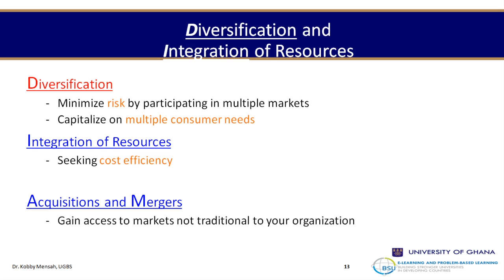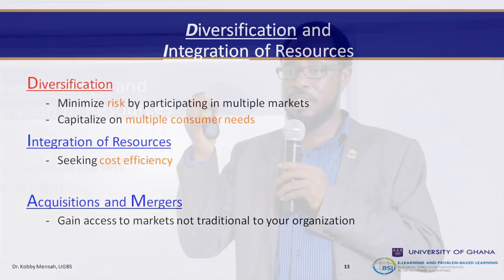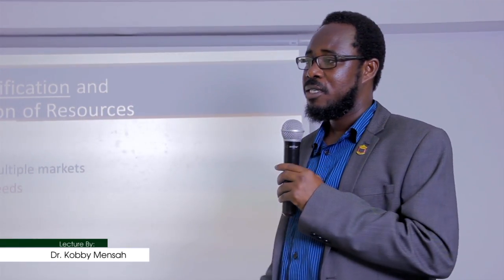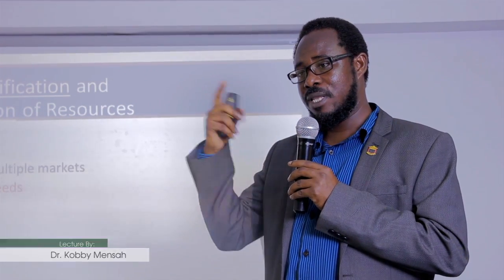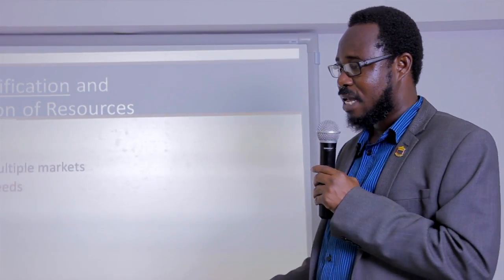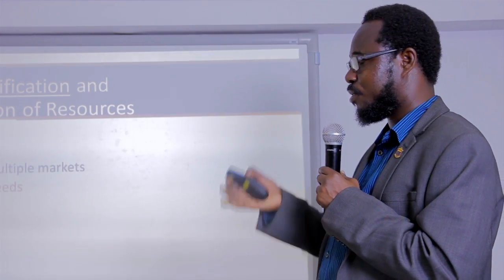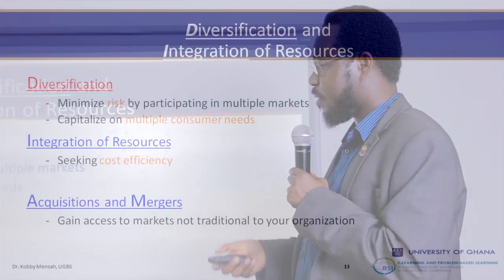A financial service provider may vertically or horizontally integrate, or acquire. They might acquire a microfinance to serve base consumers with microloans to small-scale businesses, or vertically integrate with investment banks that gather deposits and invest on your behalf. Either way — vertical or horizontal integration — they can capture the market. Integration of resources seeks cost efficiency. If you're able to integrate, there is cost efficiency through judicious application of manpower and other resources within the same structure, offering multiple products and capturing various market segments.